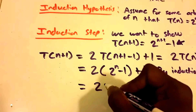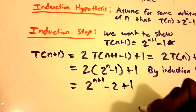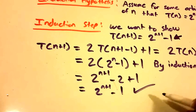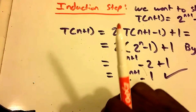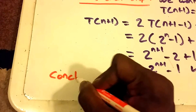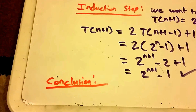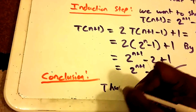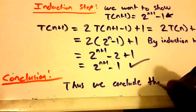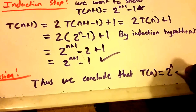This simplifies to 2^(n+1) minus 1, which is exactly what we wanted to show. The inductive step is complete. We can now state our conclusion: T(n) equals 2^n minus 1 for all n.